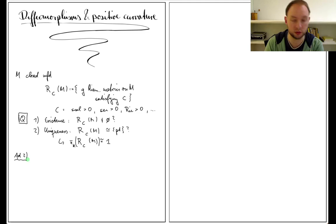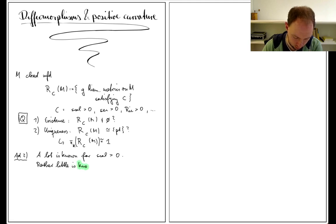I will now only talk about question two, as the article does. The state of the art is that a lot is known for the condition that the scalar curvature is positive, and in contrast, rather little is known for positive sectional curvature or positive Ricci curvature.